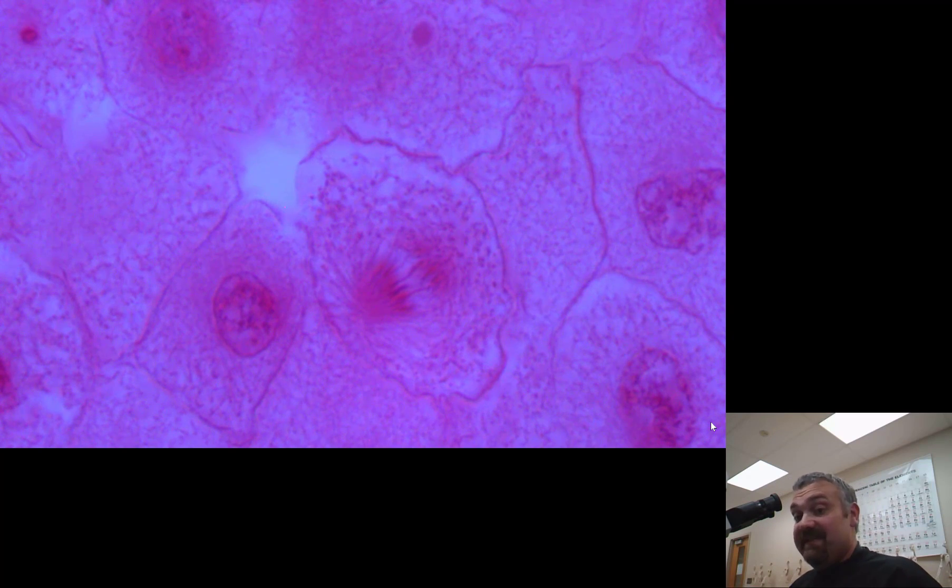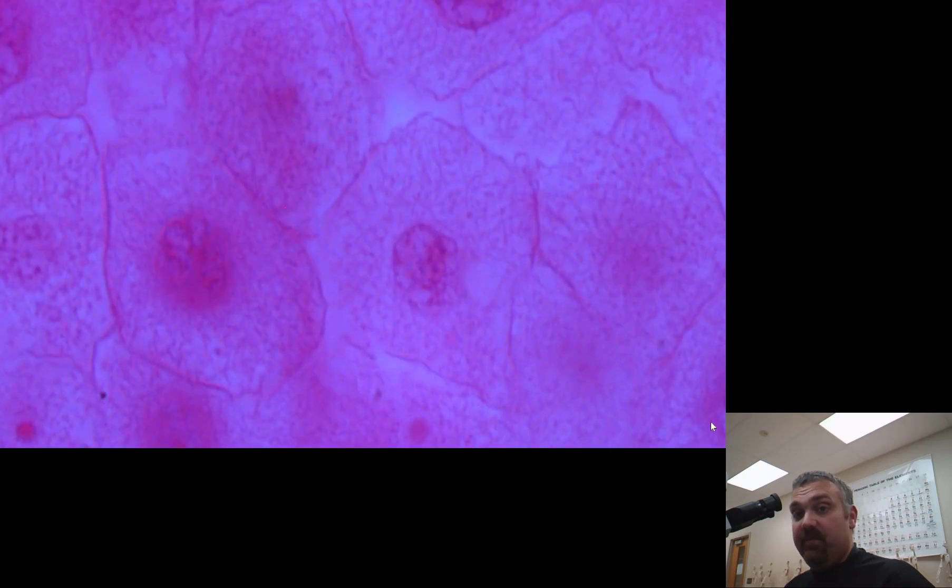You are seeing how every cell is created. Every cell is created from a pre-existing cell like this using cell division or comes from a stem cell. But stem cells still have to undergo this process. You are seeing the creation of new cells right here under the microscope.